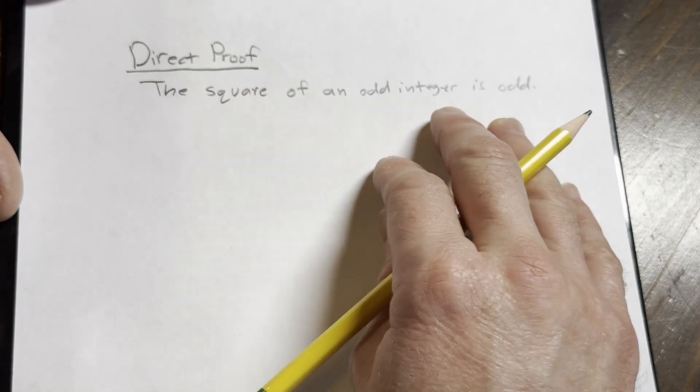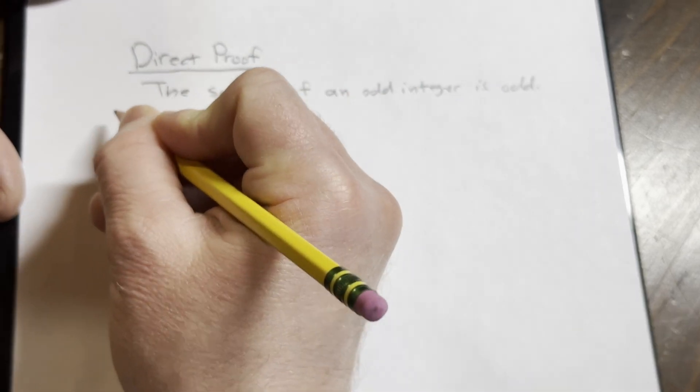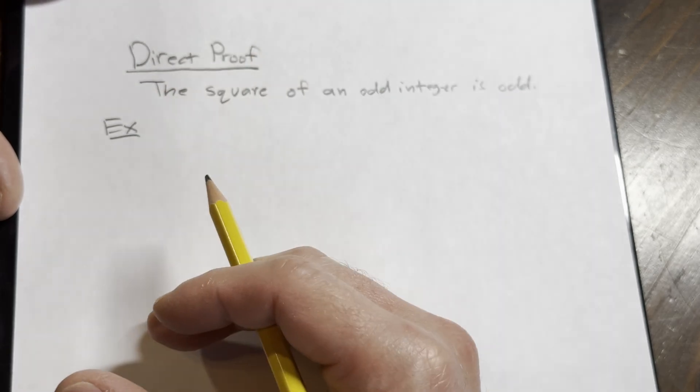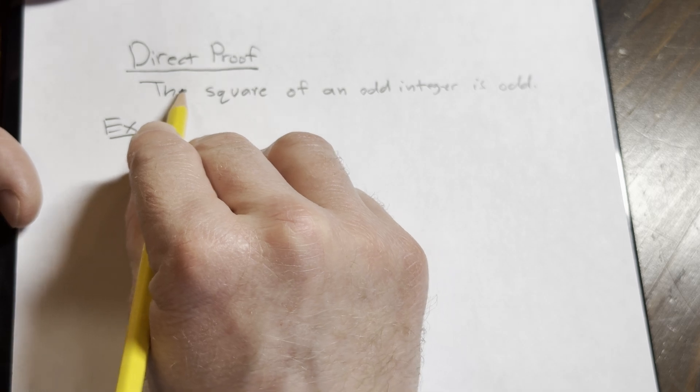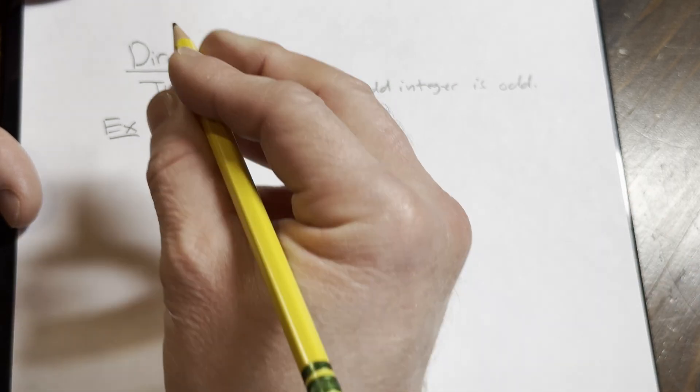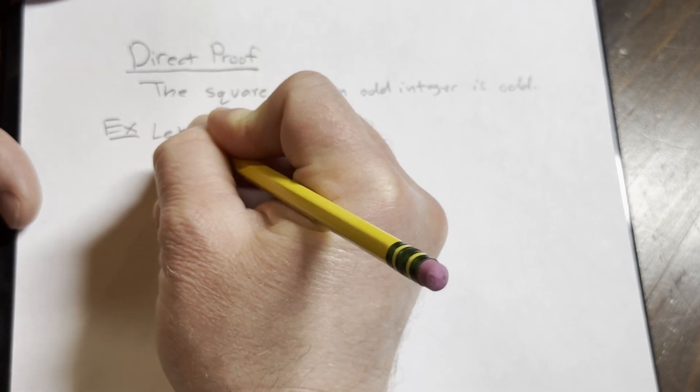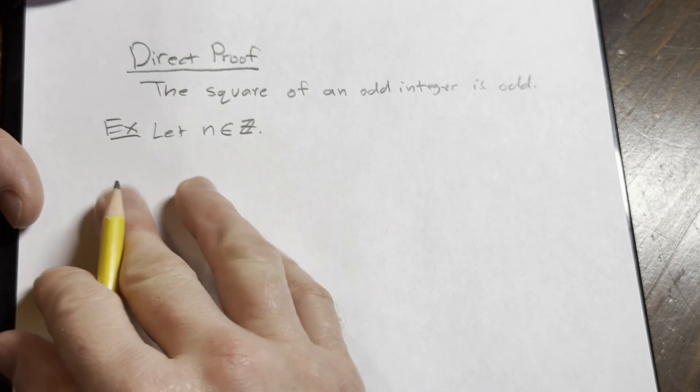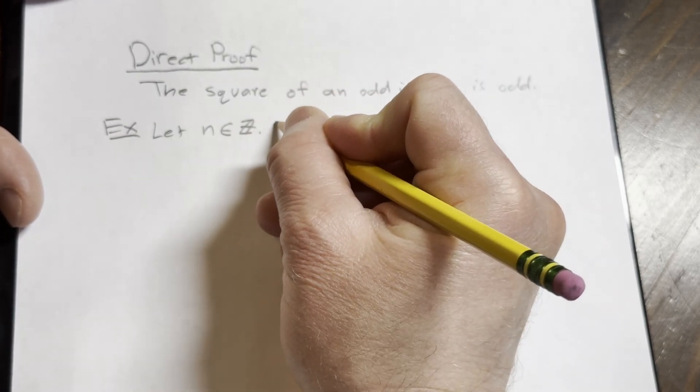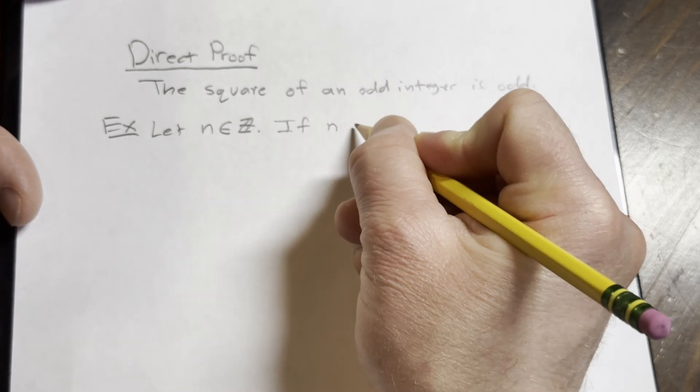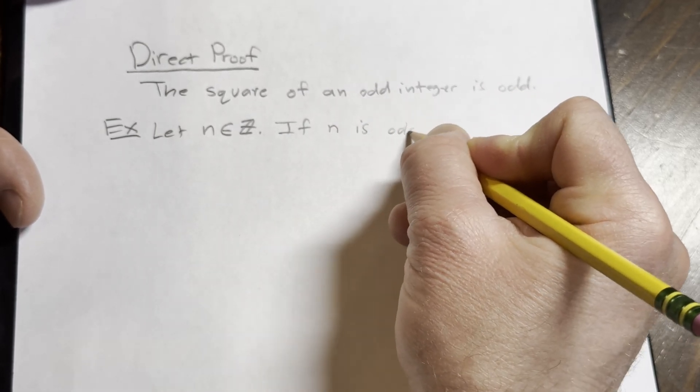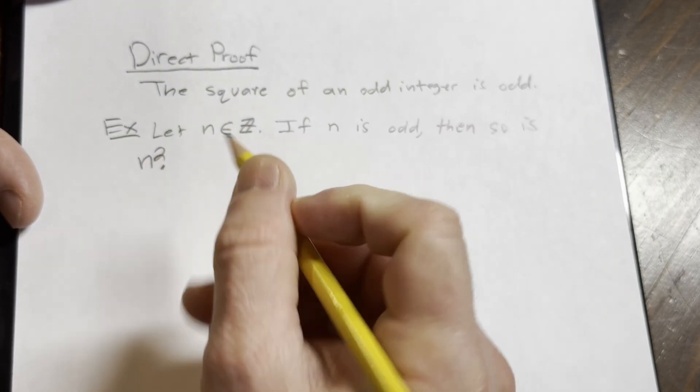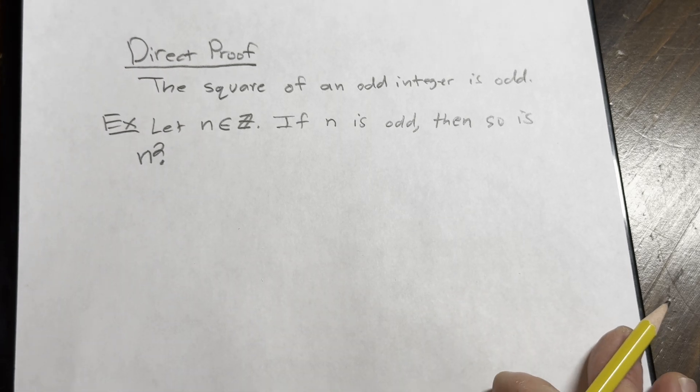So to do that, I'm going to write it a different way. Here's an example. We're going to take this statement and rewrite it in a way that will allow us to write a clean direct proof. So the statement is: Let n be an element in the set of integers. So n is an integer that's assumed. And the statement we're going to prove is if n is odd, then so is n squared.